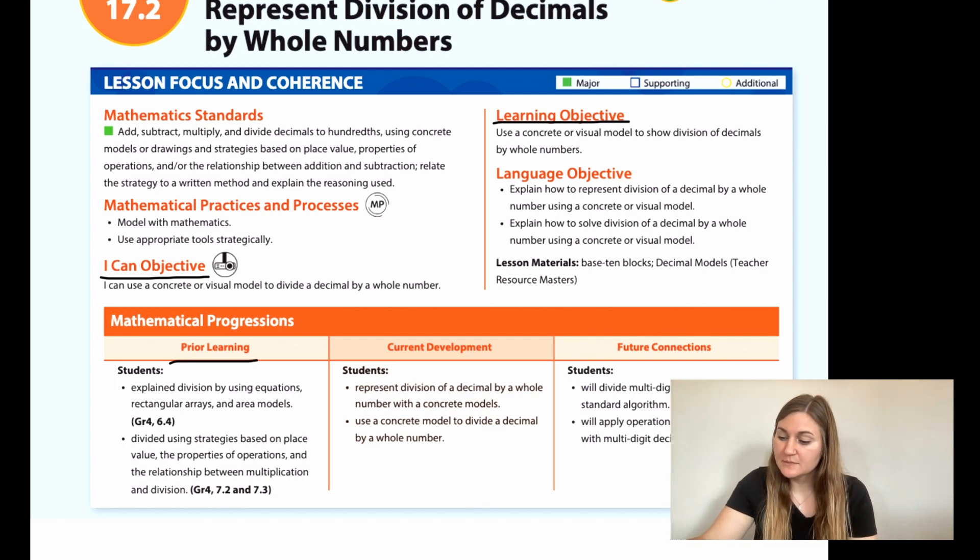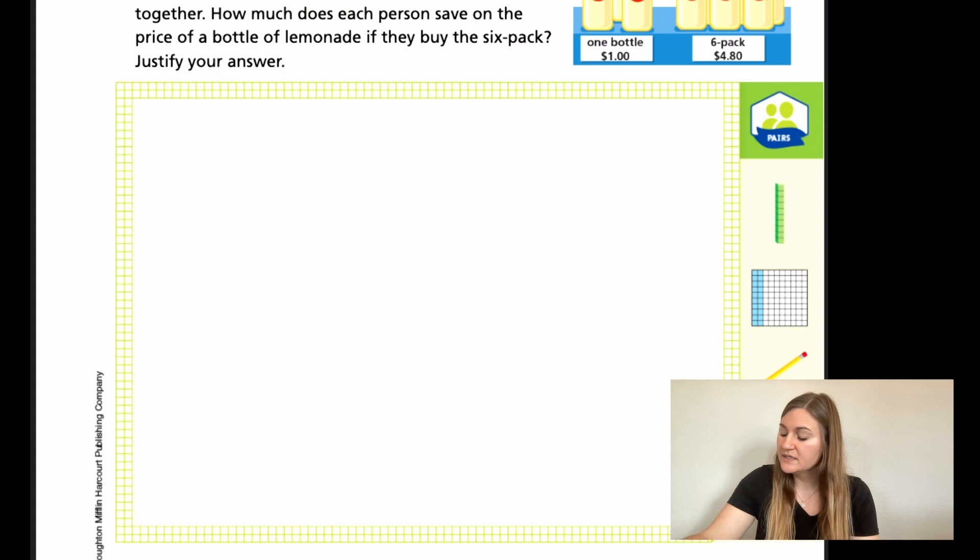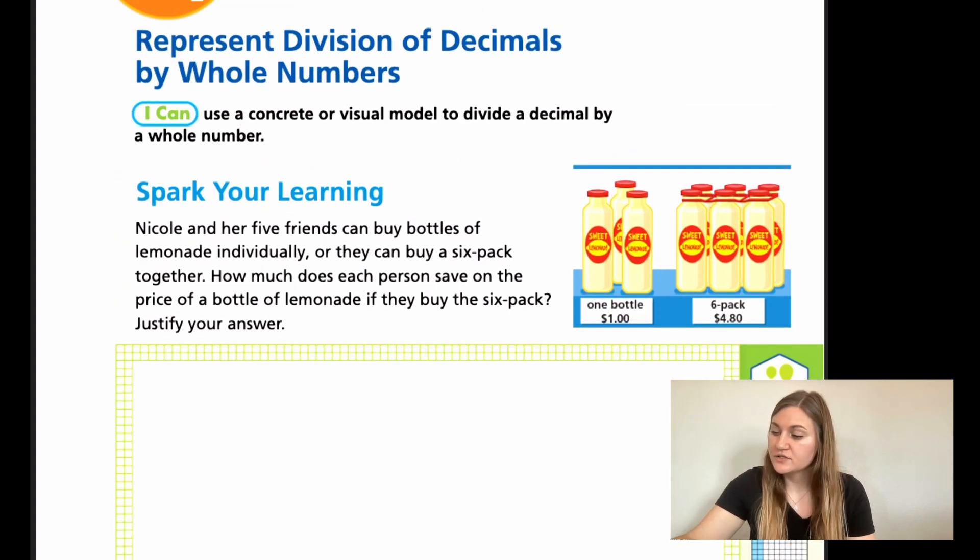The prior learning is that students explain division by using equations, rectangular arrays, and area models. Students divide using strategies based on place value, the properties of operations, and the relationship between multiplication and division. Alright, so moving into the lesson, we're on page 425.